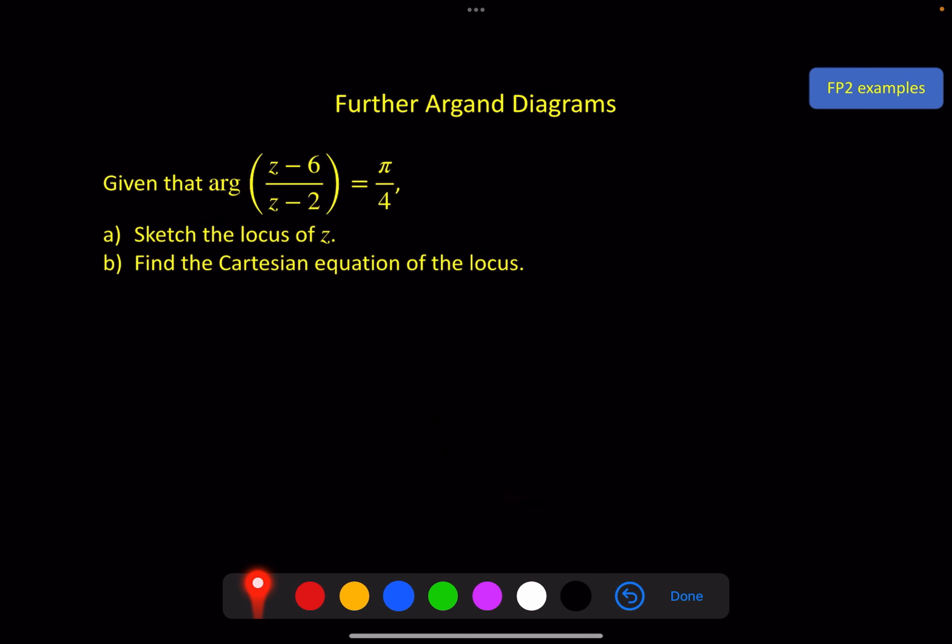Next example. Given that arg((z - 2)/(z - 6)) = π/4, sketch the locus of z. Recognizing what this form is, it is an arc that goes from this point to this point anticlockwise, giving an angle π/4, which is smaller than π/2, so it will be the major arc. So let's get this drawn on an Argand diagram. We're going from 6 on the real axis, but remember this should be an open circle, to 2 on the real axis, another open circle. And we need to go anticlockwise, so either a minor arc or a major arc, but the minor arc would give you an angle greater than π/2, and this is π/4, so it must be a major arc.